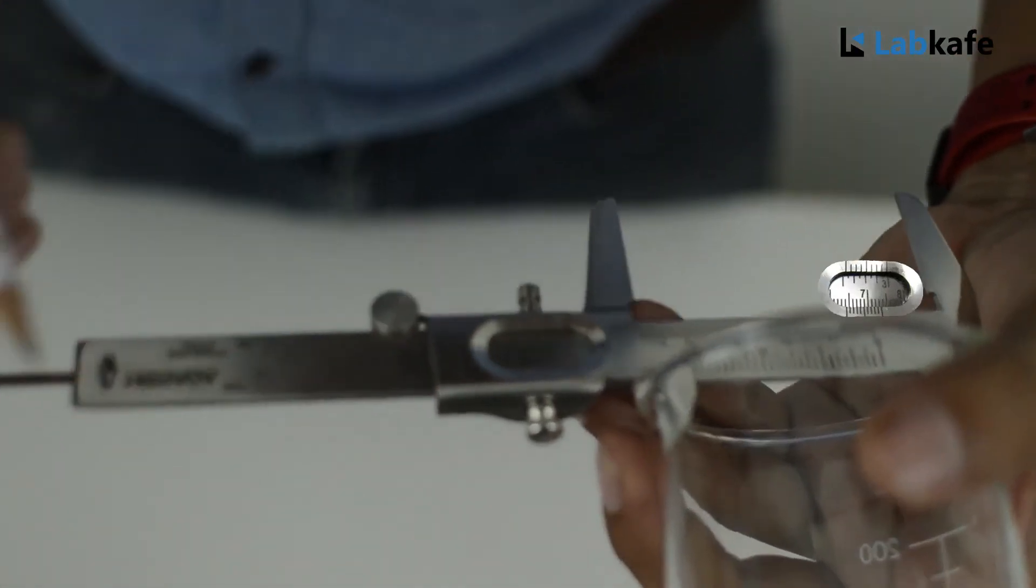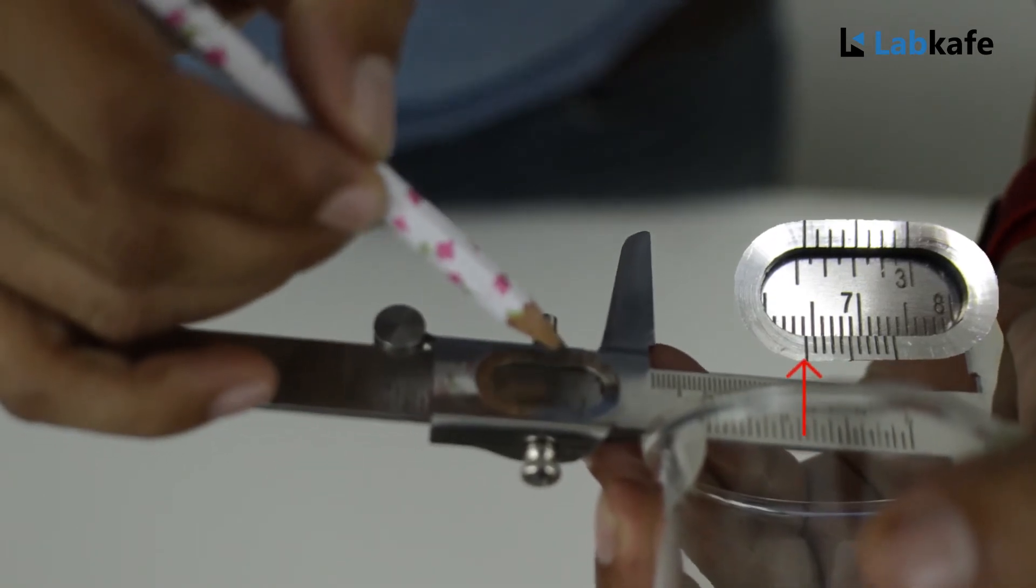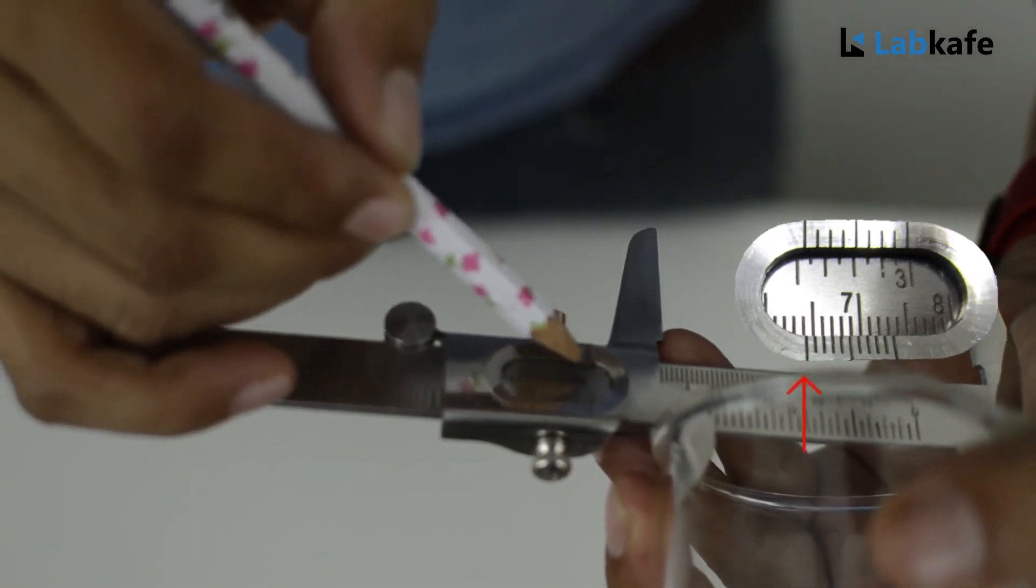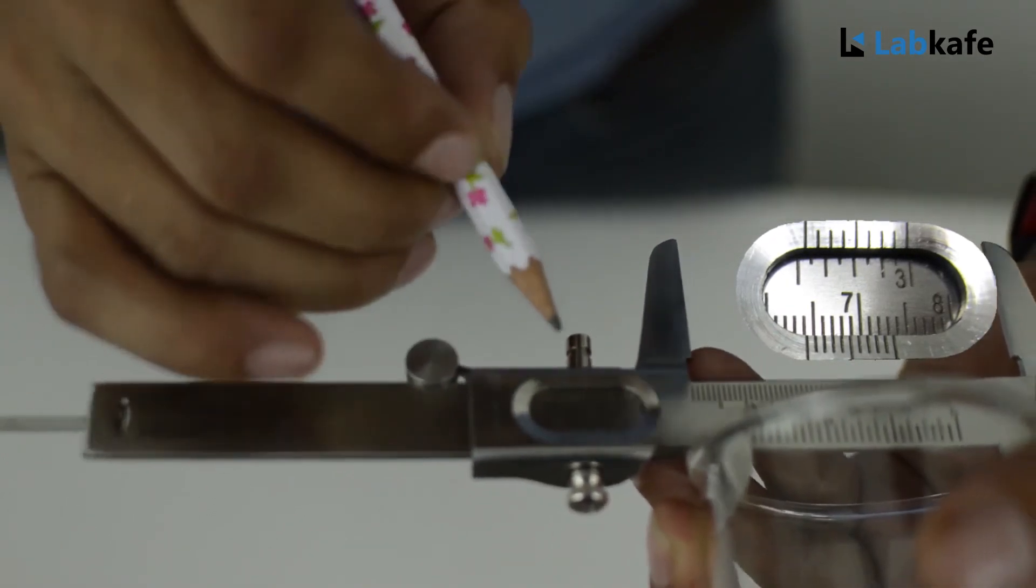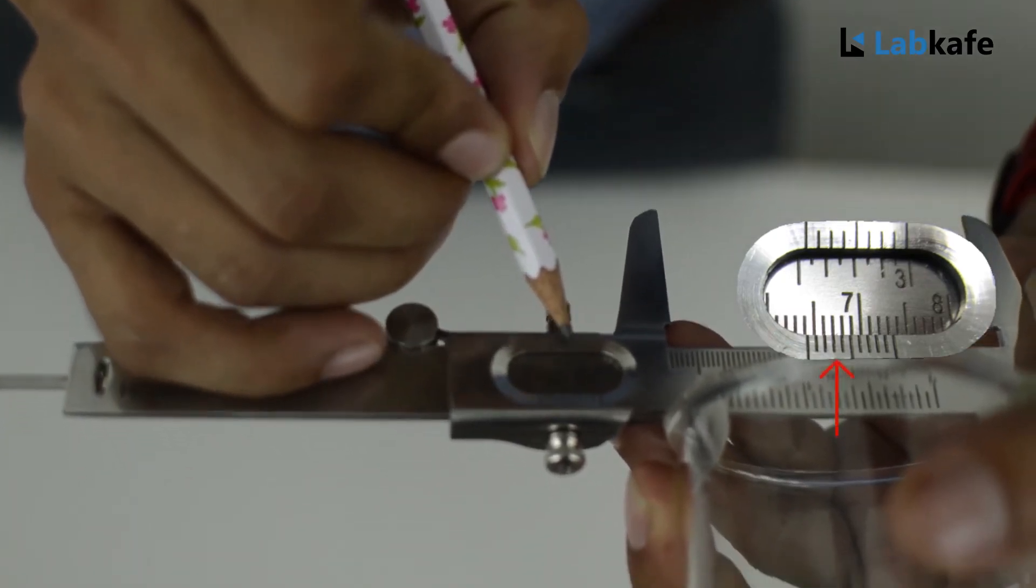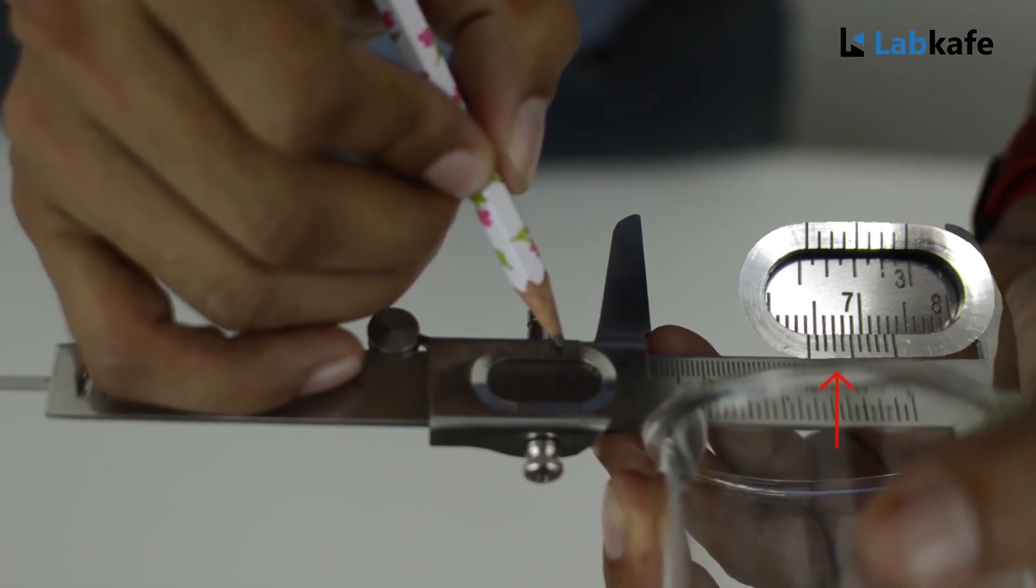As we can see, the main scale reading is 6.4 and the vernier line is coinciding with the main line on the third division. So the total reading is 6.4 main scale reading and 3 vernier scale reading.